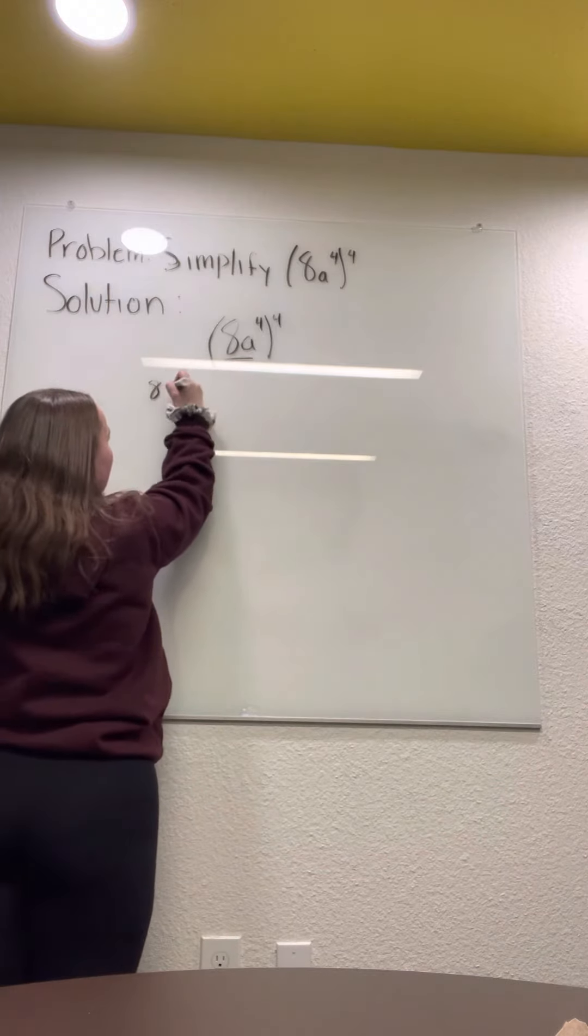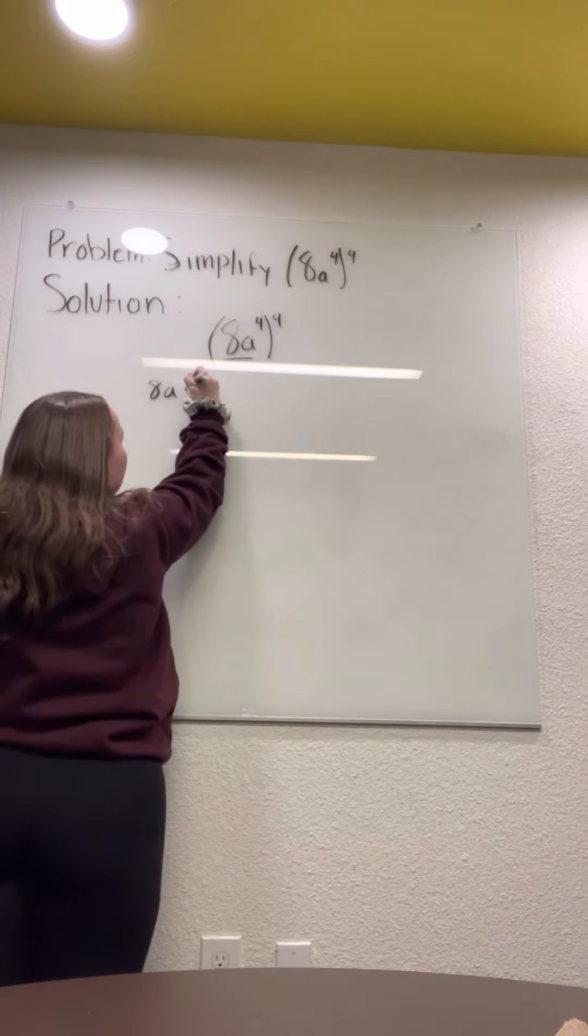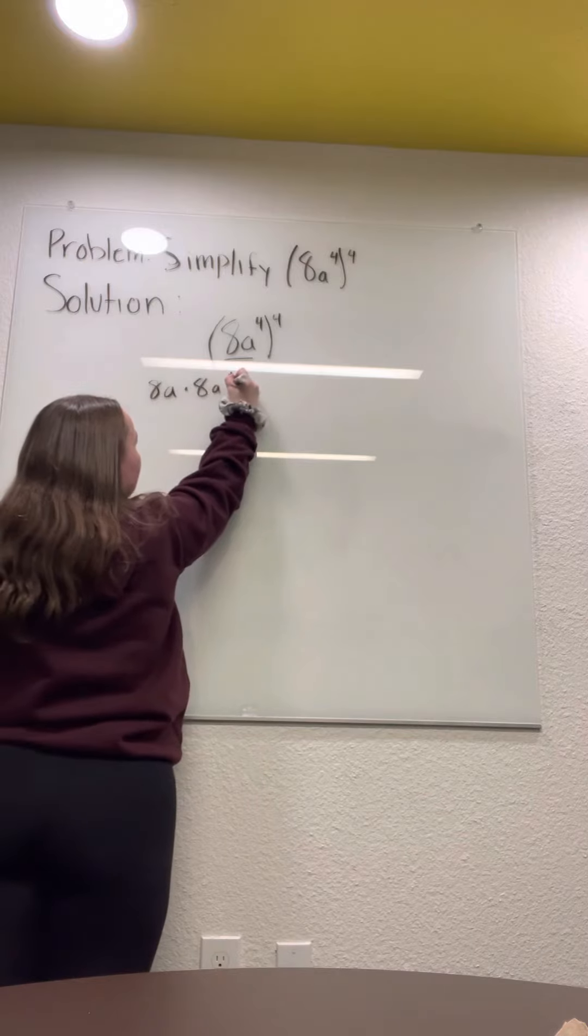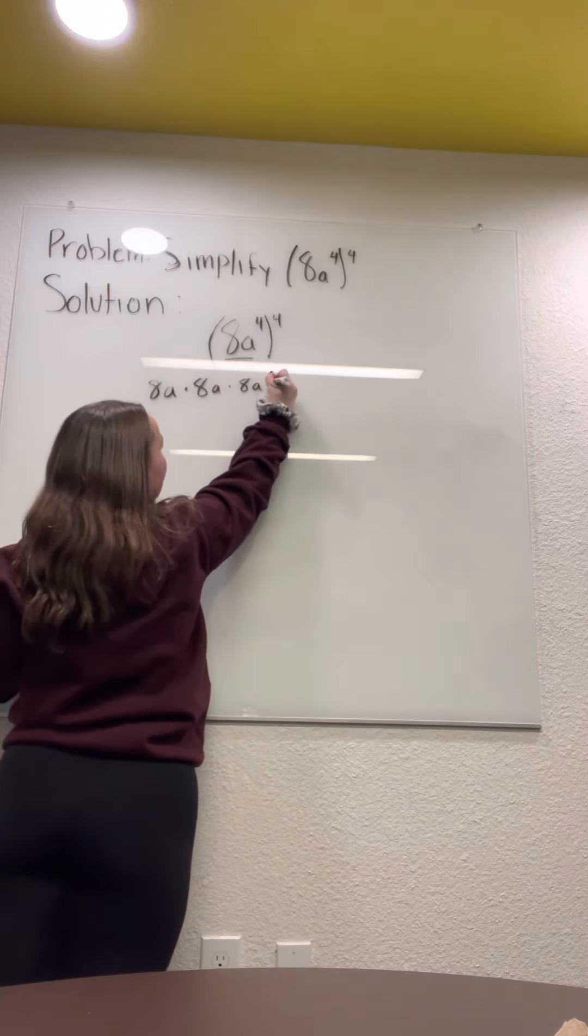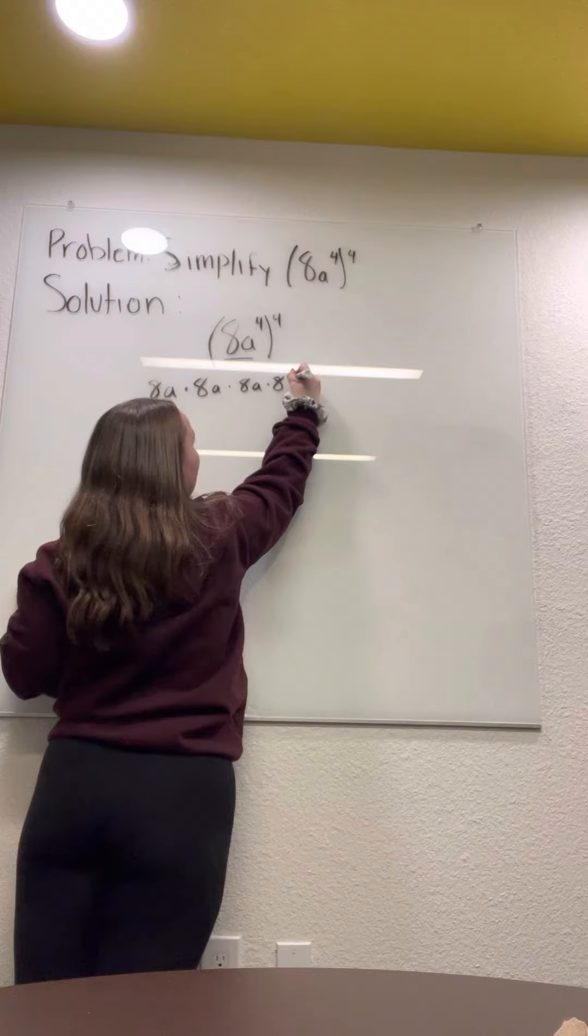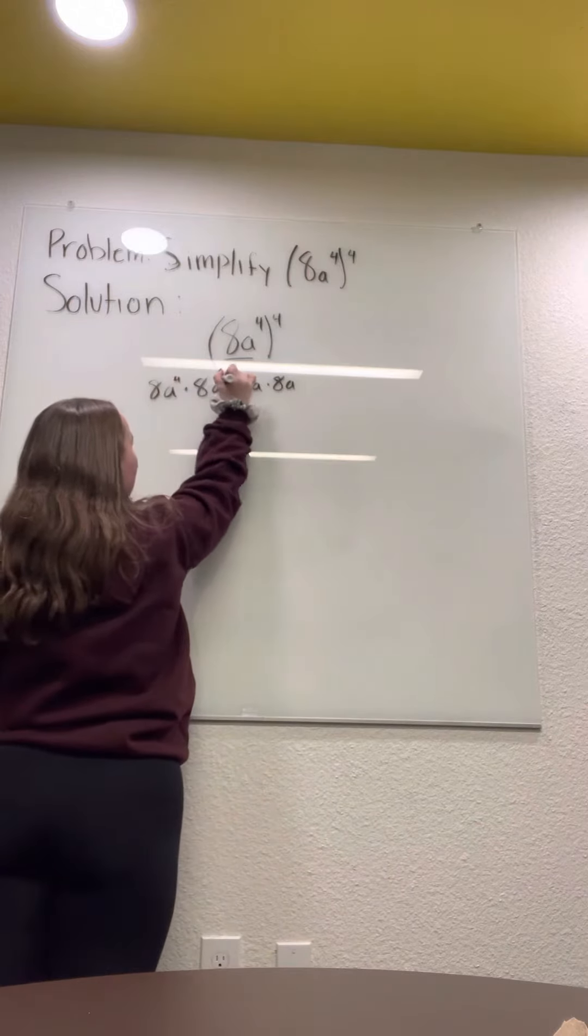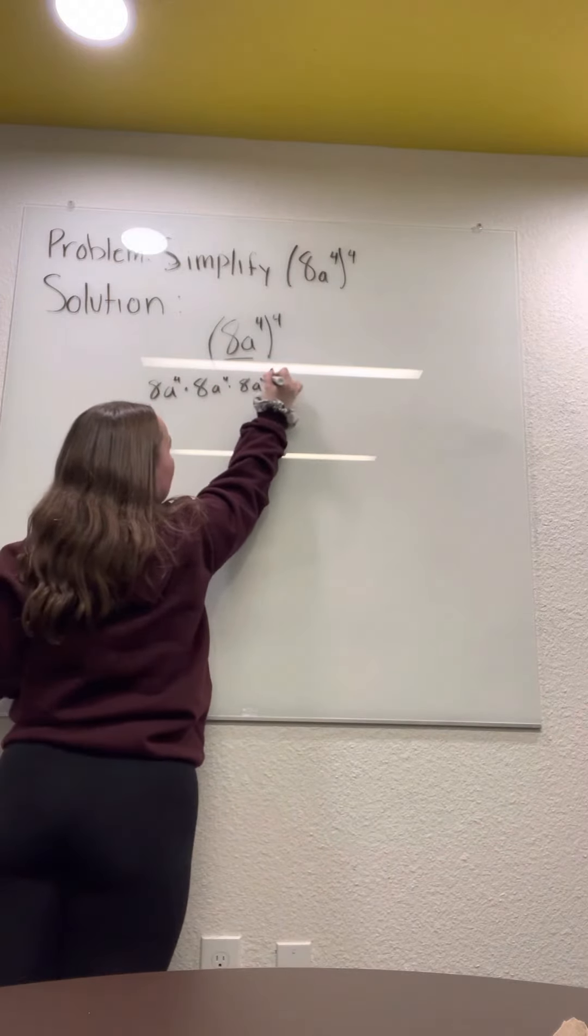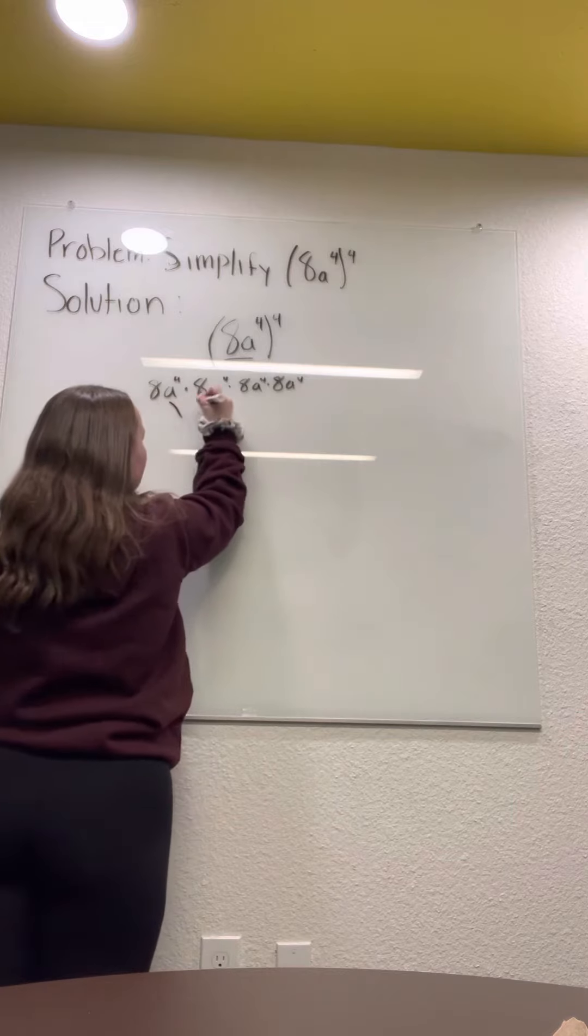So 8a times 8a times 8a, and all of this is to the fourth power. 8 times 8 is 64.